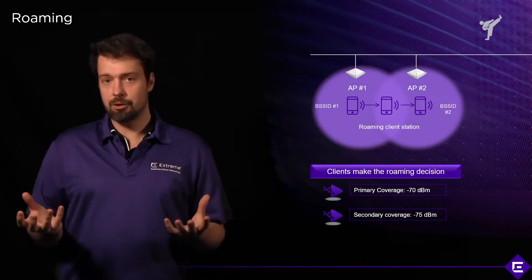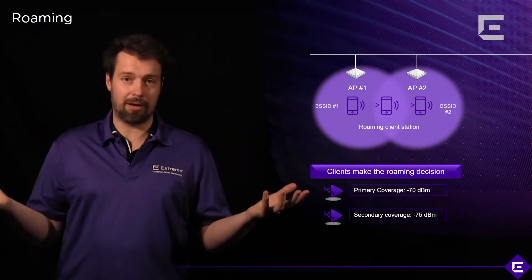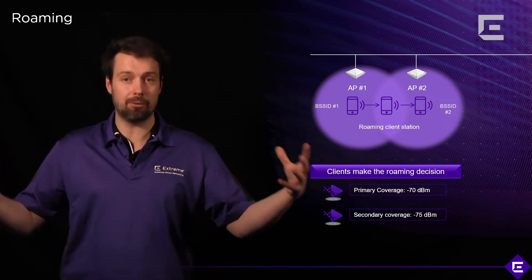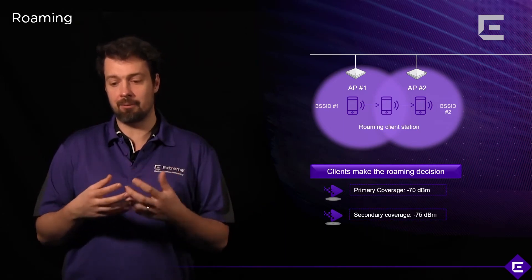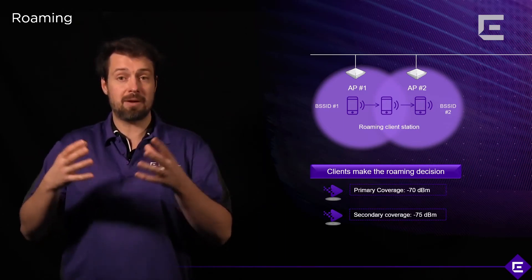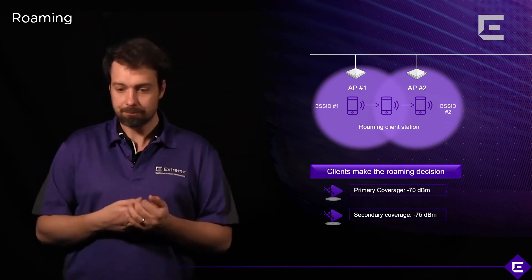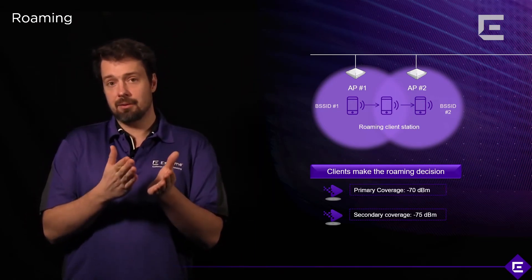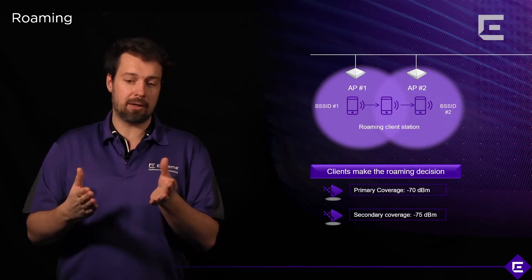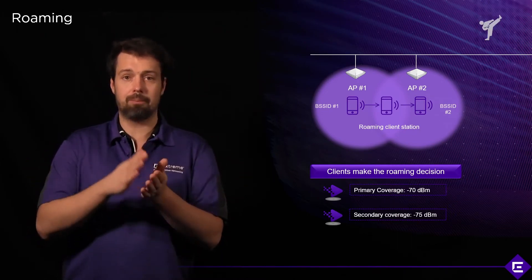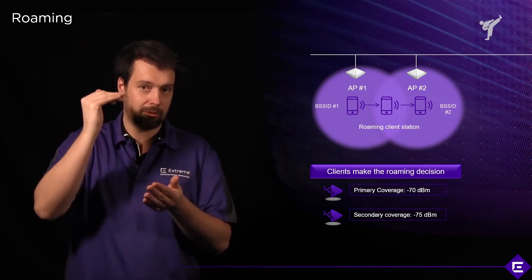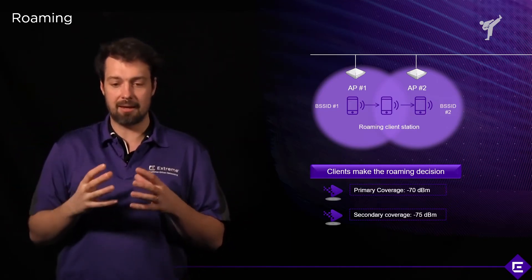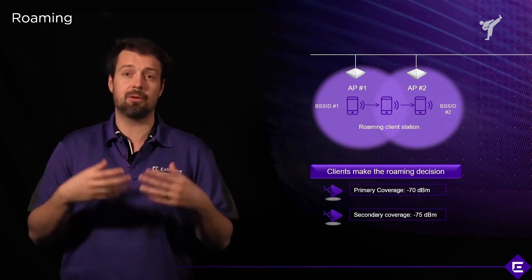The coverage of a single AP obviously doesn't go on forever. Electromagnetic signals don't travel on forever — they will fade out. The phenomenon of them fading out is called Free Space Path Loss, or FSPL. Before a client device leaves the coverage area of an AP completely, or before the SNR falls below the threshold we still consider healthy, it needs to switch to another AP. That handover process is called roaming.